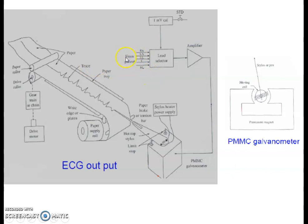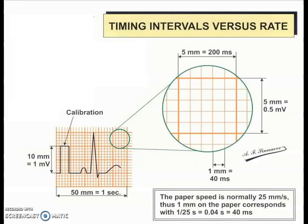As per the signal which comes from the patient's body, this heated stylus moves over the heat-sensitive paper in order to give good frequency response and in order to record the ECG signal which is in the range of hundreds of hertz. The ECG paper generally contains a signal where the first signal itself is called the calibrating pulse. This pulse is of 1 millivolt height, which is followed by your original ECG signal.